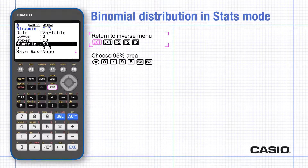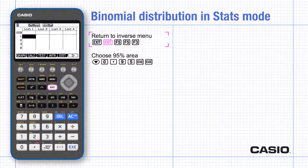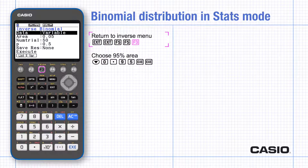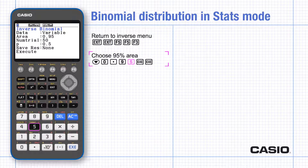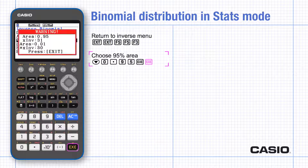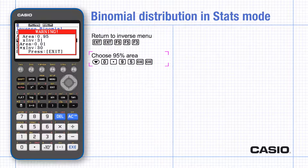For the critical region at the top end, go back through the menus and choose distribution, binomial and inverse menu. Choose 95% for the area so that the top tail has a probability of 5%. The warning shows that had the area only been 0.01 different, X equals 30 would have been the value instead of 31.